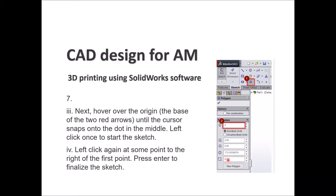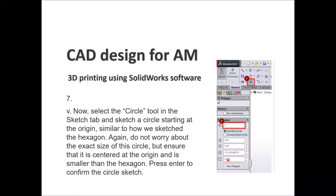Next, hover your mouse over the origin — the base of the two red arrows — until the cursor snaps onto the dot in the middle. Left-click once to start the sketch, then click and drag to draw the hexagon polygon. Press Enter to finalize your sketch. Then select the Circle tool in the Sketch tab and sketch a circle starting at the origin of the polygon. Make sure it is centered at the origin and smaller than the hexagon. Press Enter to confirm the circle sketch.